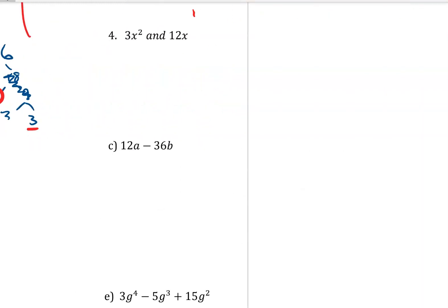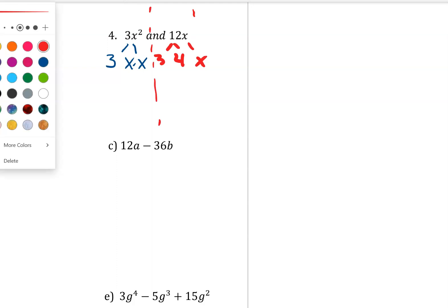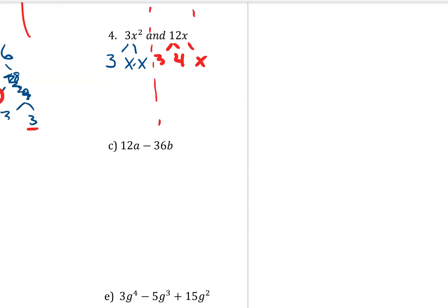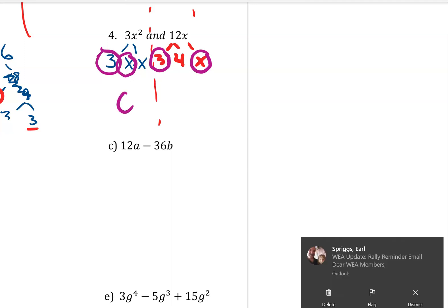3x squared and 12x. 3x squared is 3 times x times x. 12x is 3 times 4 times x. Looking for common factors: I have a 3 and an x. My greatest common factor, therefore, is 3x.